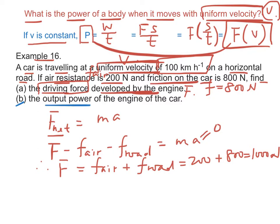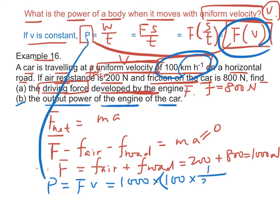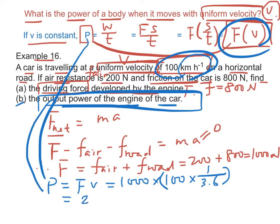Part B: what is the power of the engine of the car? Since power equals Fv, we have power of the engine equals 1,000 times the speed 100 km/h. We have to convert the speed from km per hour to m per second. Therefore, the speed is 100 times 1 over 3.6 m per second. Therefore, the output power of the engine of the car is equal to 2.78 times 10 to the power 4 watts.